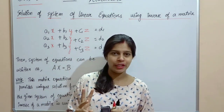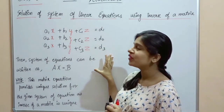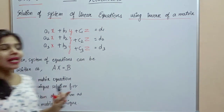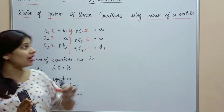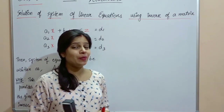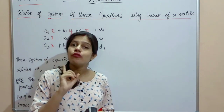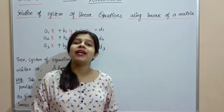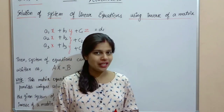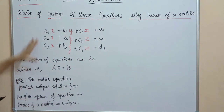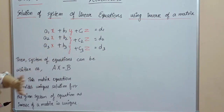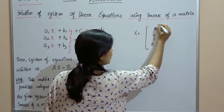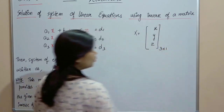So is chapter mein basically hum system of linear equations solve karna hai which has unique solution. Aapse 1 or 2 marks se puchha ja sakta hai ki ye consistent system hai ya inconsistent system hai. Maine system of linear equations li hai of 3 variables — x, y, z. Toh hum solution of system of linear equations nikaalenge using inverse of a matrix. So X ko main capital X se denote karungi variables ko in the form of matrix: x, y, z — jo ki 3 cross 1 order ki hogi.